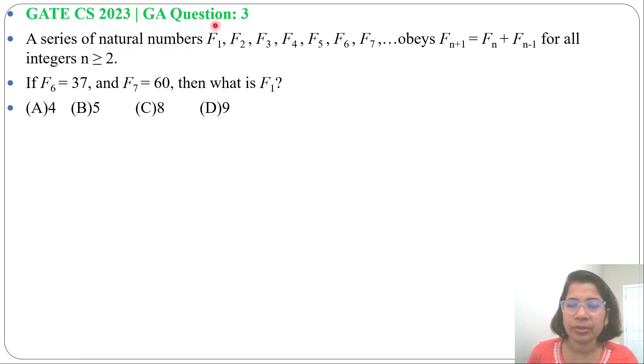A series of natural numbers f₁, f₂, f₃, f₄, f₅, f₆, f₇... obeys f(n+1) = f(n) + f(n-1) for all integers n ≥ 2.